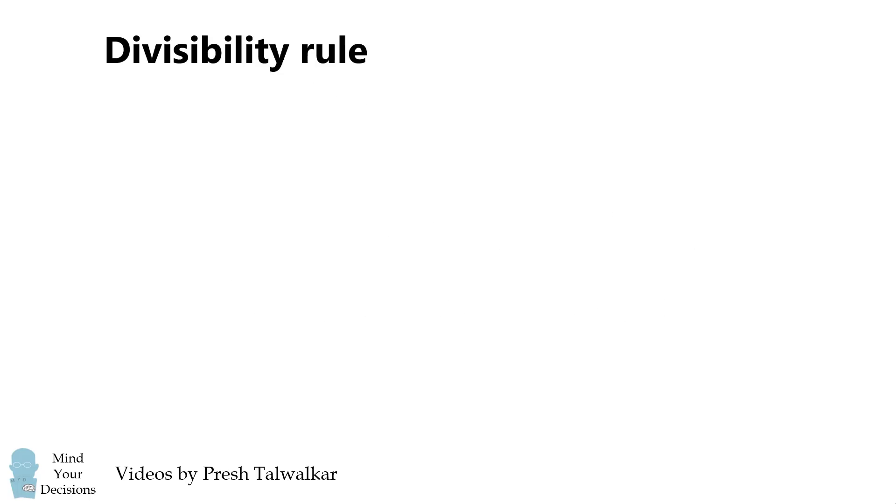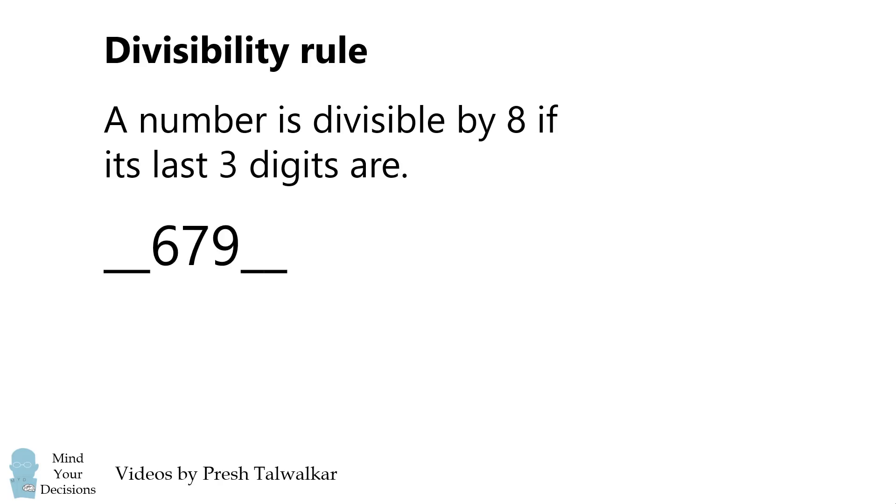So let's recall some divisibility rules. We'll get started with the divisibility rule for 8. A number is divisible by 8 if its last three digits are. We have a five-digit number, and we'll focus on the last three digits.